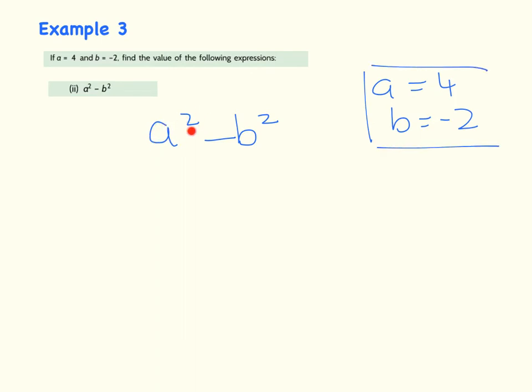A squared means 4 all to the power of 2. And I'm going to keep that in brackets, because it just means that I'm just not going to make any mistake. Minus b to the power of 2 means minus 2 all to the power of 2.